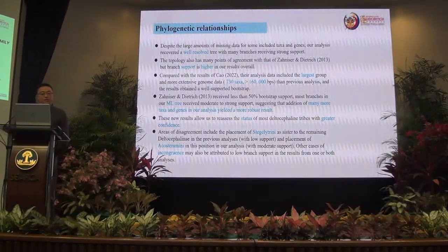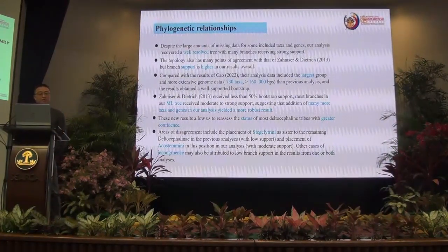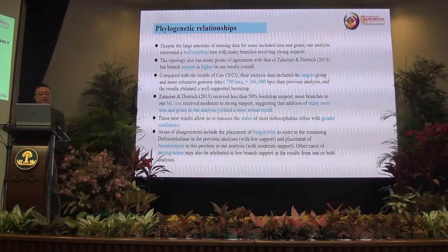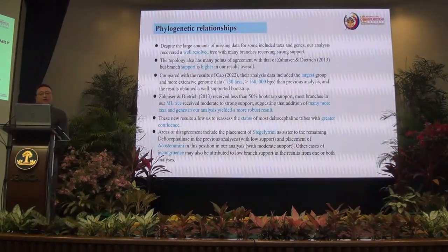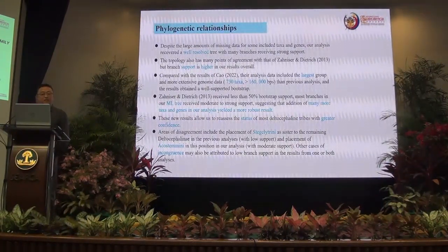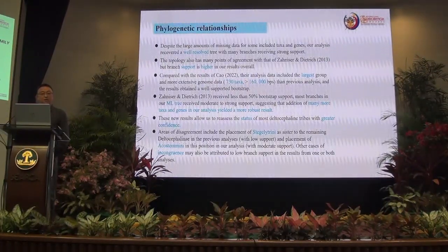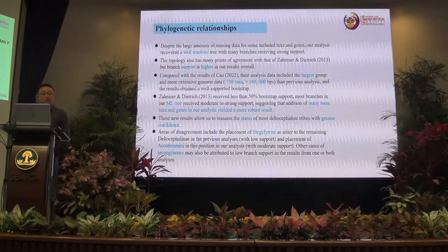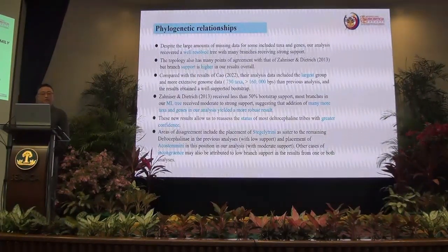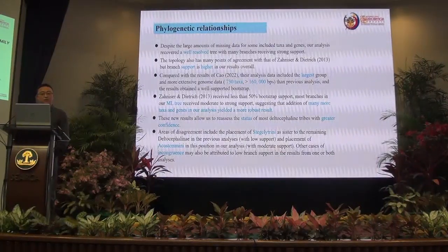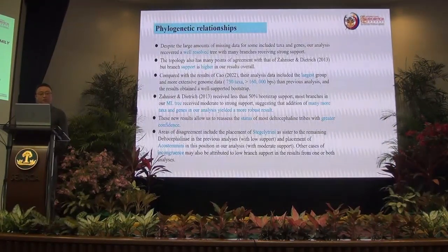A real disagreement includes the placement of Alatini as sister to the remaining Deltocephalinae in the previous analysis with low support, and the placement of Acostemmini in this position in our analysis with moderate support. Other cases of discordance may also be attributed to low branch support in the results from one or both analyses.